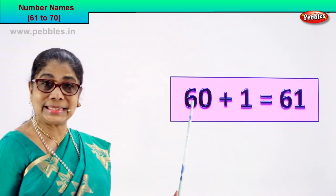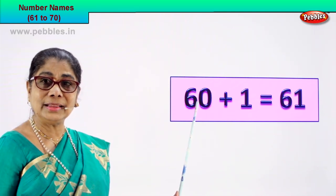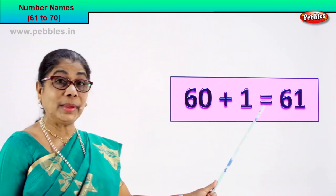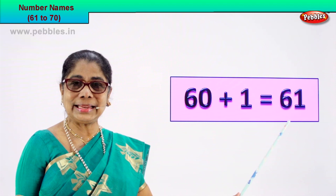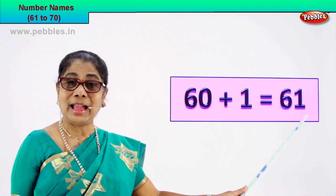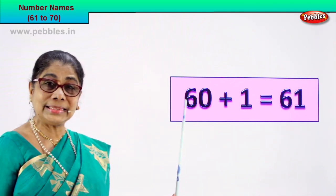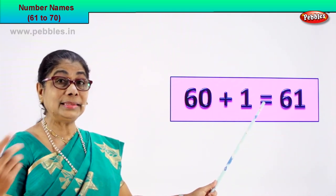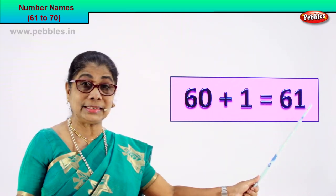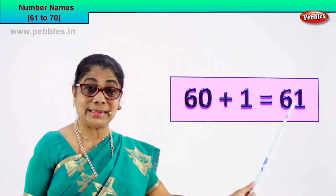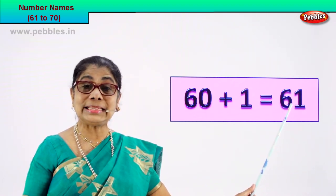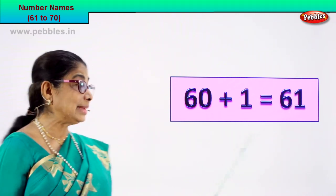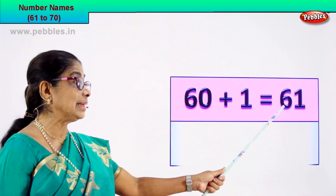Look — 60. Can you see this number? Good! 60 plus 1 is equal to 61. 6 and 1, 61. How do we get 61? 60 plus 1 is equal to 61. 6 and 1, 61. The numeral 61. Now we must learn to write its name. Spell and write 61. How do we write 61?